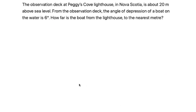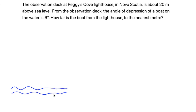To wrap this video, let's look at one application problem. The greatest skill in trigonometry is the ability to read a word problem, configure an image, and use that image to solve mathematical expressions. So let's read this out loud: 'The observation deck at Peggy's Cove's lighthouse in Nova Scotia is about 20 meters above sea level.' The first thing that comes to mind is the sea level. Peggy's Cove's lighthouse is drawn here with its observation deck, and this height is 20 meters.